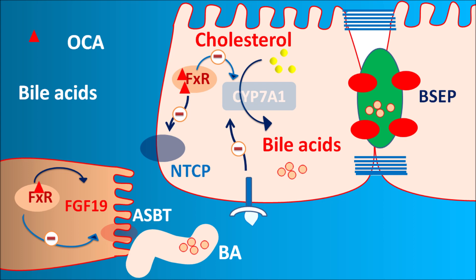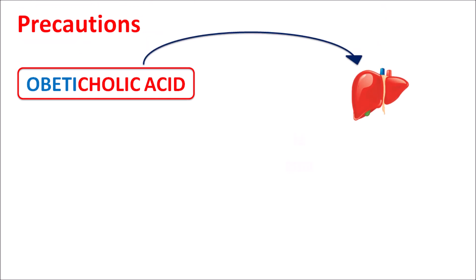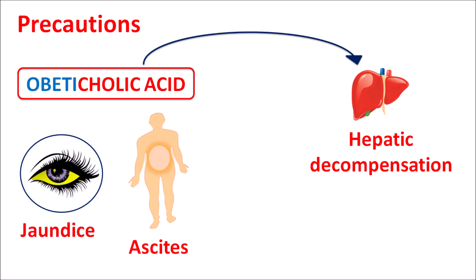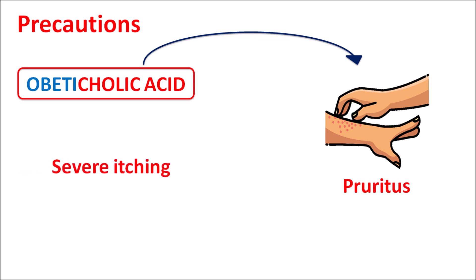One important precaution for obeticholic acid is that it can produce hepatic decompensation, so it is not suitable for all patients. It can increase total bilirubin and ALP levels, indicating hepatic dysfunction. Symptoms that may develop include jaundice, ascites (abdominal swelling), and GI bleeding. If any of these symptoms are observed, obeticholic acid should be used carefully. Additionally, this drug can precipitate pruritus — severe itching spread over the body — causing sleep disturbance.